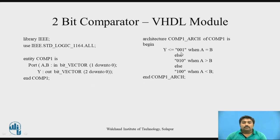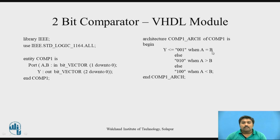The third part is the architecture part. We write 'architecture', then the architecture name, then 'of entity name is'. The same name is supposed to be used. Then 'architecture begin'. We know the truth table — from that truth table we write: Y <= "001" when A = B, else "010" when A > B, else "100" when A < B. So '001' means Y(0) bit is 1, '010' means Y(1) bit is 1, and '100' means Y(2) bit is 1, depending on the condition. Once you are done with the concurrent statements in your architecture, you write 'end architecture' followed by the architecture name.